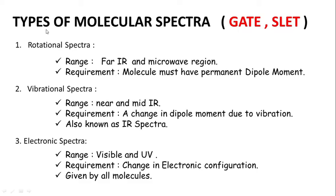The first topic is the types of molecular spectra. There are three types: rotational spectra, vibrational spectra, and electronic spectra. Rotational spectra lie in the far IR and microwave region, and the requirement is that the molecule must have a permanent dipole moment. Vibrational spectra lie in the near and mid IR region, and the requirement is a change in dipole moment due to vibration. This is also known as IR spectra.